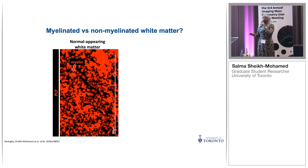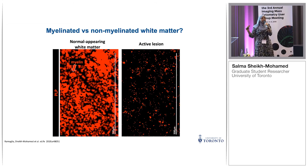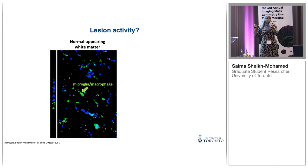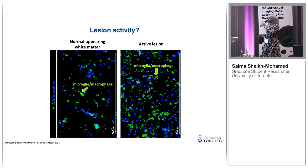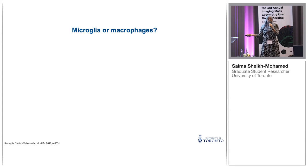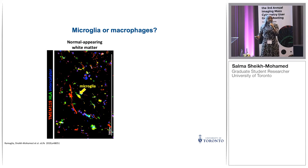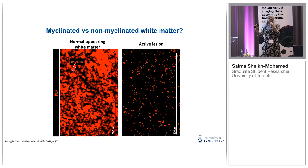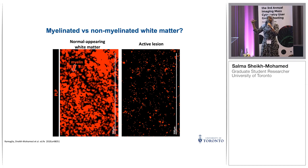Looking at myelin: in the normal appearing white matter — an area of the MS brain that theoretically shouldn't have a lesion yet — myelin is found all over the tissue, as expected. Compare that to the active lesion, where myelin is almost completely gone. Interestingly, those spot-like remnants of myelin in the active lesion overlap with our phagocytic cells, showing us it's myelin that's actually inside a cell that has eaten it up.